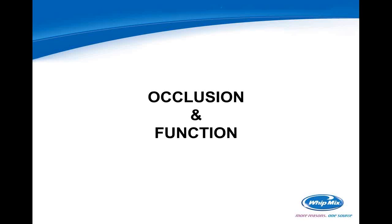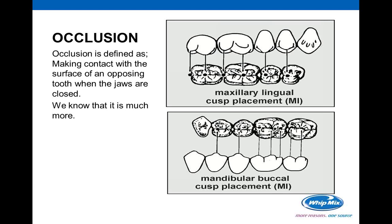Now let's talk about occlusion and function — at a high level. Occlusion is defined as making contact with the surface of an opposing tooth when the jaws are closed. As technicians we talk about how teeth fit together and close on each other, but it's a lot more than that — it has to do with movement, individual patient movement, defined by tooth surface, condyle shape, muscle operation, and whether or not the patient has TMJ disorders.